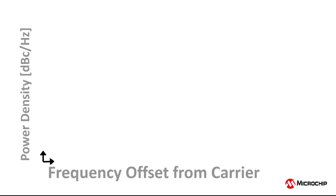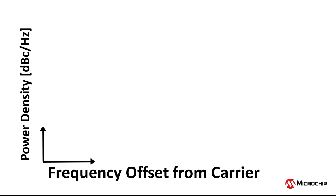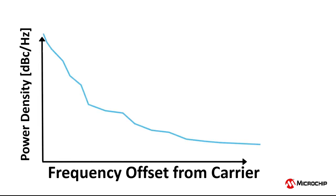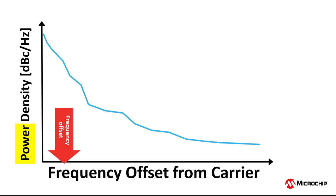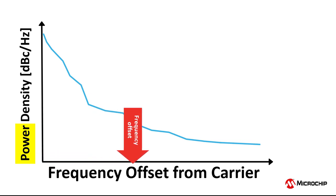Recall that any point on a phase noise plot is a representation of the phase power at a given frequency offset from the carrier.